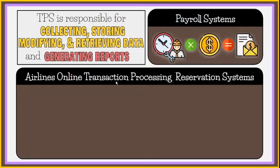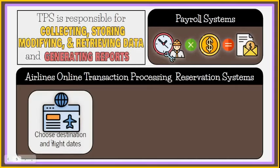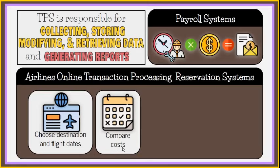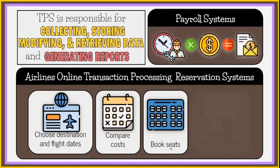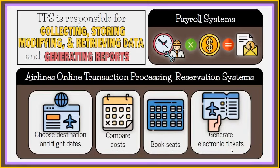Another example is an online transaction processing reservation system used by airlines and travel agencies. These systems enable travelers to select and book their own flights. Passengers can choose their destinations and flight dates, compare costs on alternate flight dates, book their seats, and generate electronic tickets. The system records each sale transaction and at the end of the day can generate a report of all transactions to view which seats have been sold.